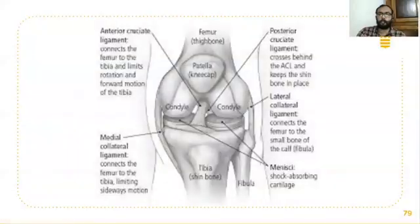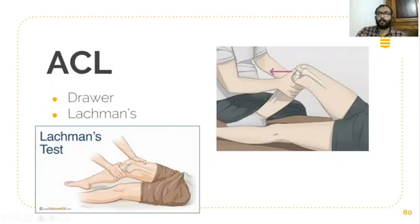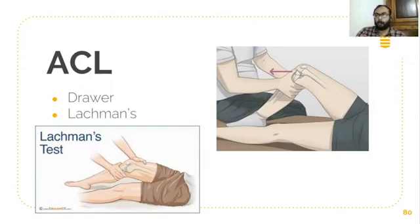Coming to the clinical examination of ACL, the most common test is the drawer's test — mainly the anterior drawer test — in which the patient's knee is flexed to 90 degrees. The examiner fixes the foot by sitting on it, asks the patient to relax, and holds the upper end of the tibia just distal to the joint line, then pulls the tibia anteriorly. If there is an ACL tear, there is anterior translation of the tibia compared to the lower end of the femur.